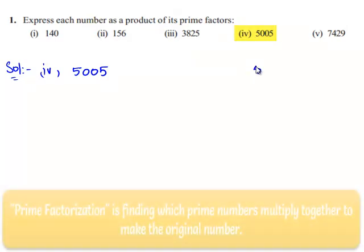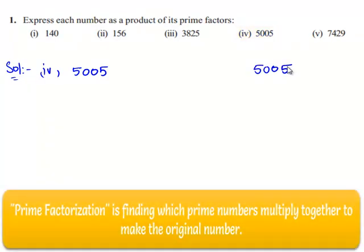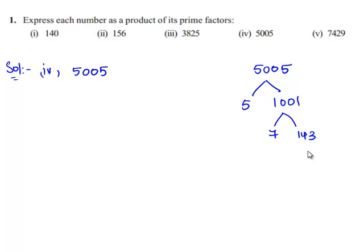we shall factorize it. The least prime number that goes in 5005 is 5. It can be expressed as 5 times 1001. 1001 can be expressed as 7 times 143, and 143 can be written as 11 times 13.